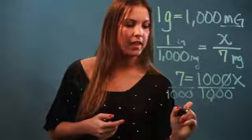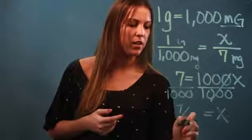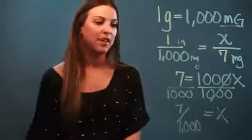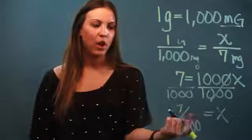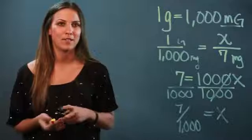And when I do that, I get X equals seven over 1,000. So that means that seven milligrams are seven one-thousandths of a gram. And that is how you find out what part of a gram a milligram is.